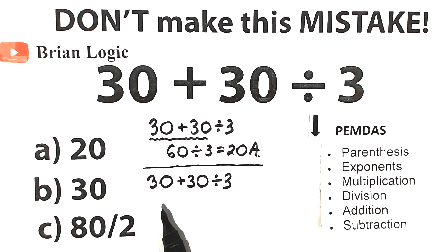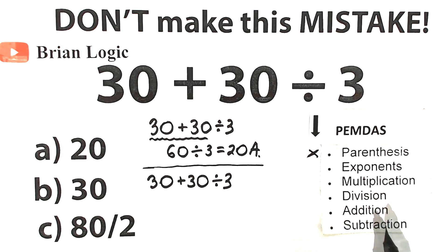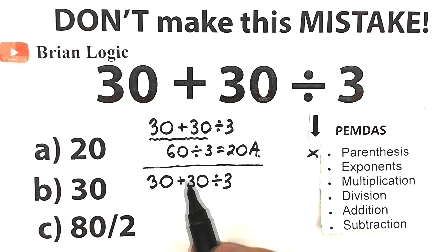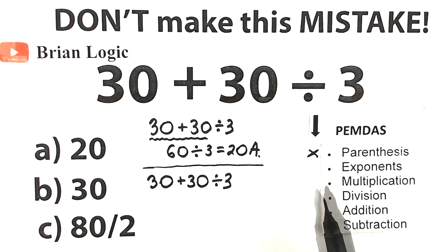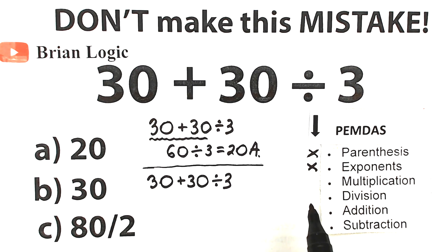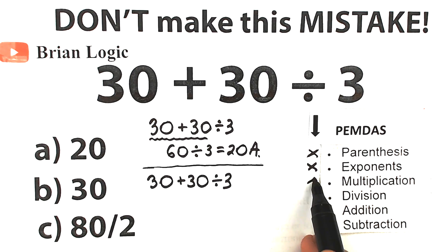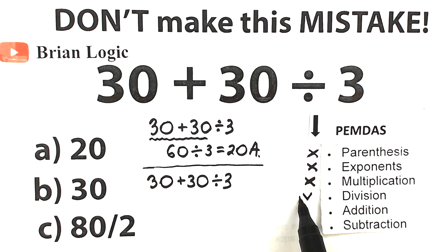Let's scan for parentheses — I don't see any, so we skip that part. What about exponents? Any squares or cubes? I don't see any of those either, so we skip that part. Now multiplication and division group — let's look. We have a division sign right here, so we should start with this division. We don't have parentheses, we don't have multiplication. We do have division here.